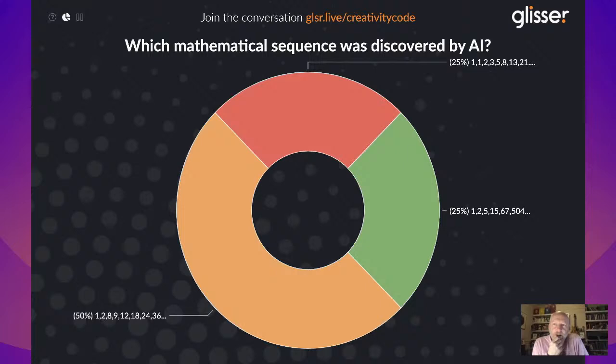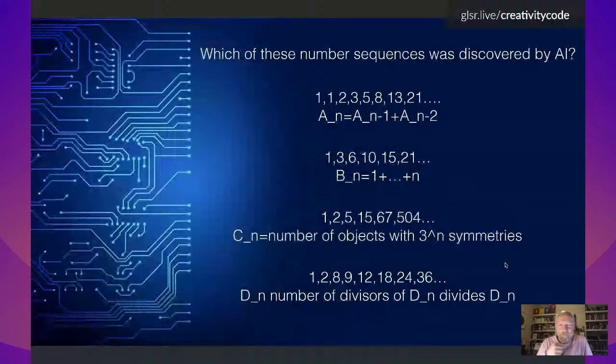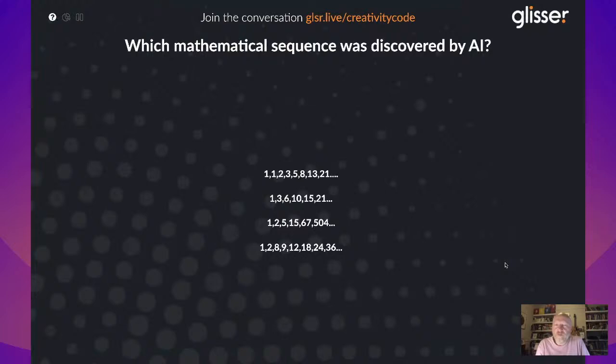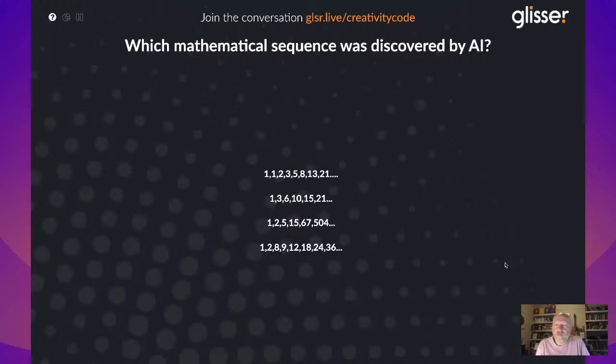I'm very pleased that you've gone for the last one — D: 1, 2, 8, 9, 12, 18, 24, 36 — and not the third one, because actually that is the AI one. The third one — 1, 2, 5, 15, 67, 504 — is a sequence that I discovered in my own research. A quarter of you still thought that was created by AI, but no, it was created by me. AI is having trouble going beyond simple bits of mathematics, because it's not good at telling stories, and mathematics is all about telling stories. Until AI really has an inner world — a world that it needs to share with us — its creativity really is a kind of tool for us as creatives.